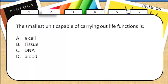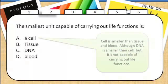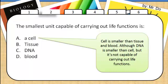Number 2, the smallest unit capable of carrying out life function is a cell. A cell is smaller than tissue and blood. Although DNA is smaller than a cell, it is not capable of carrying out life basic functions.